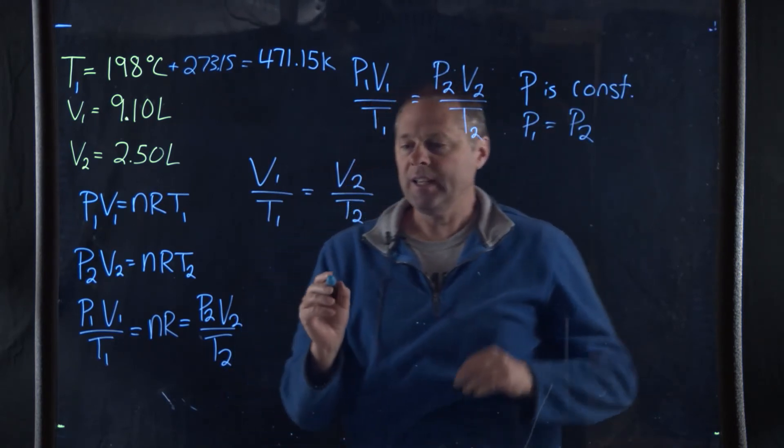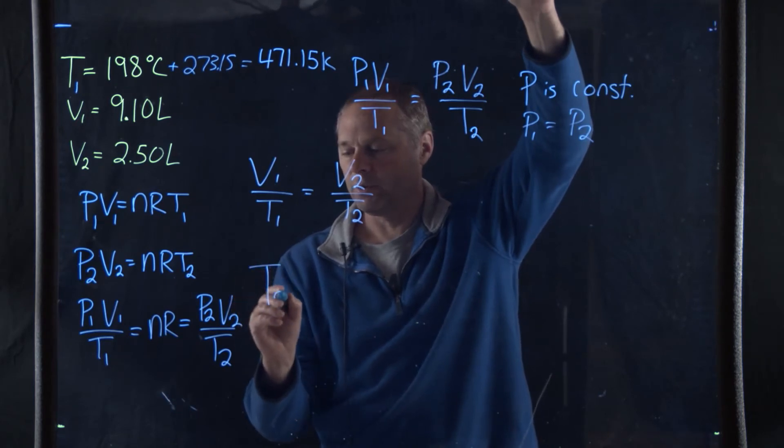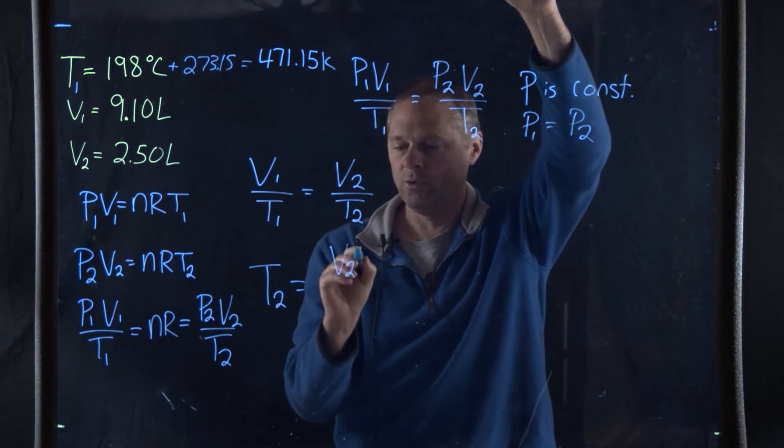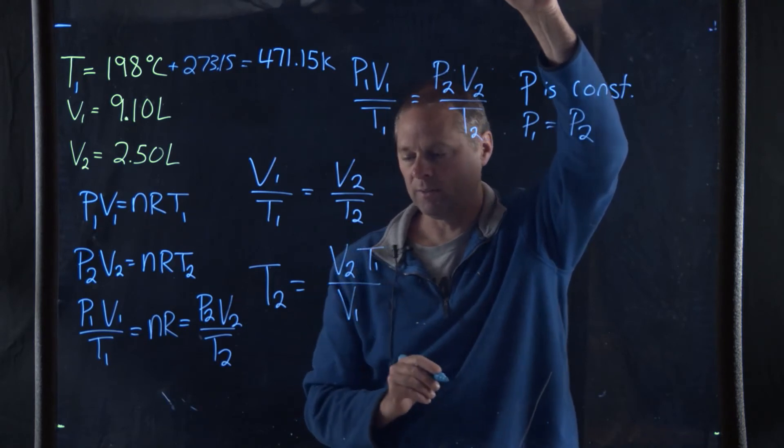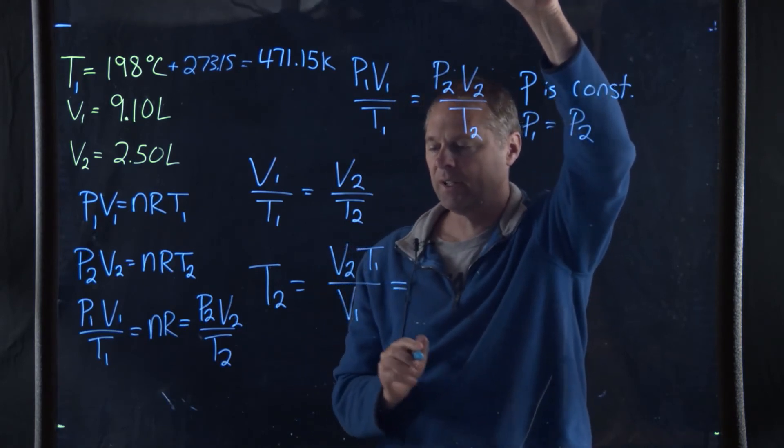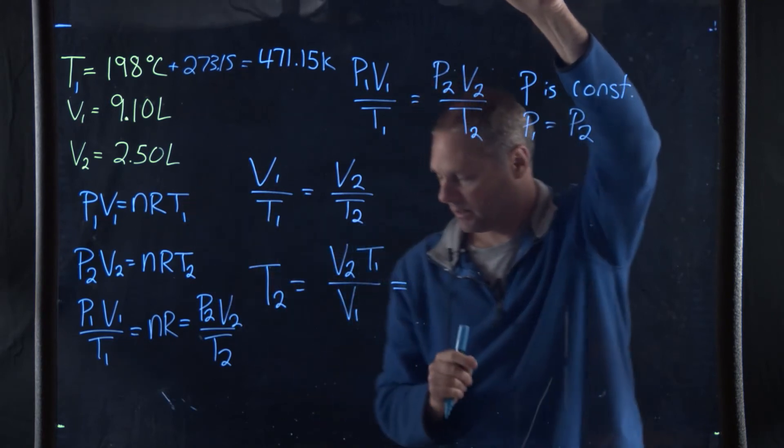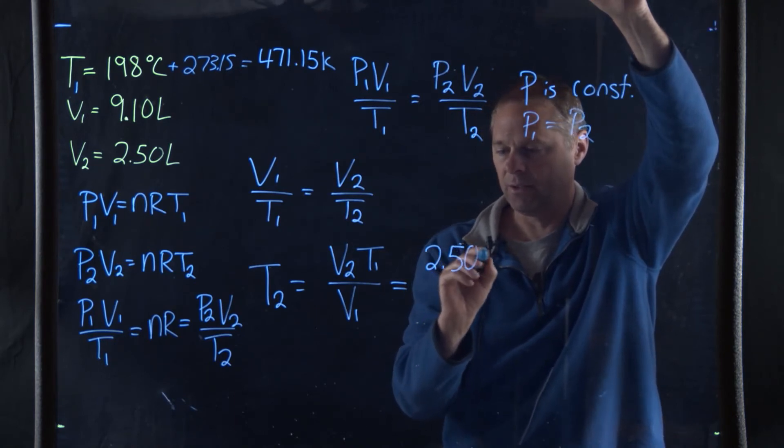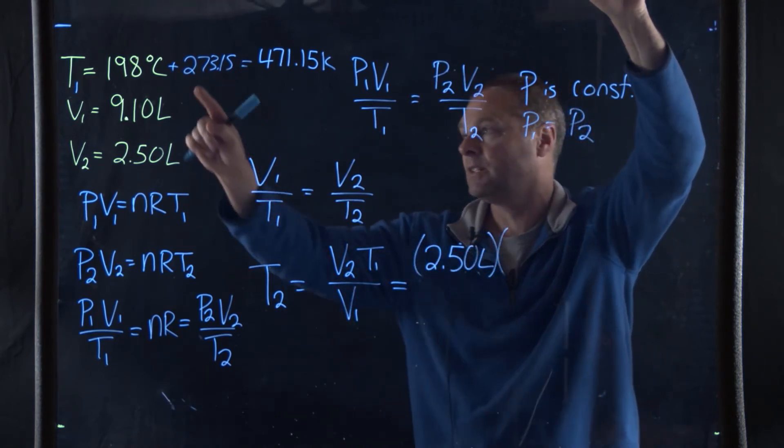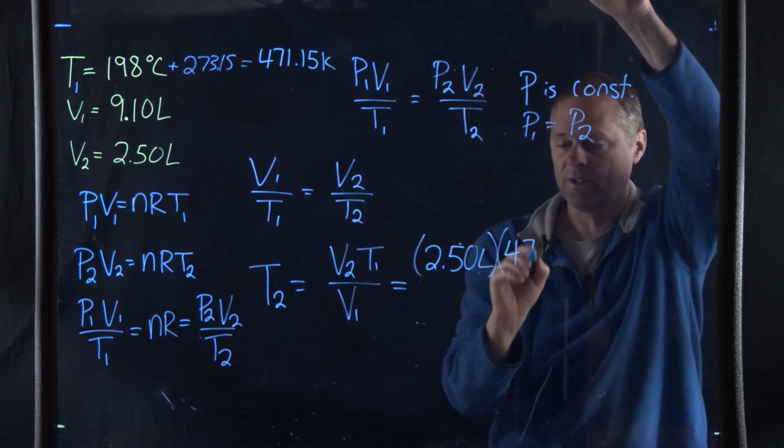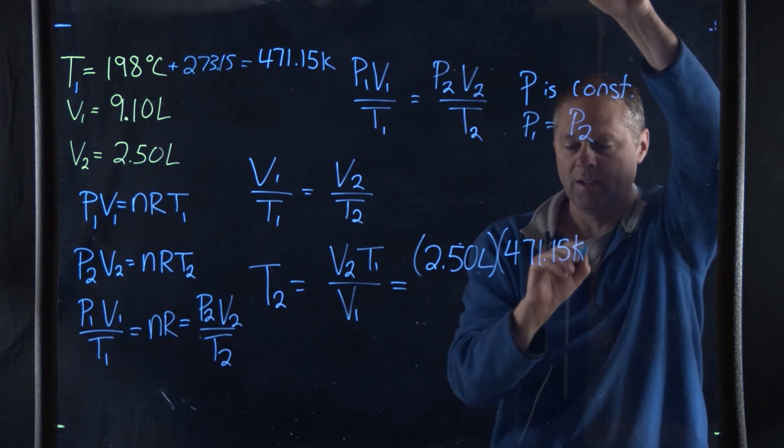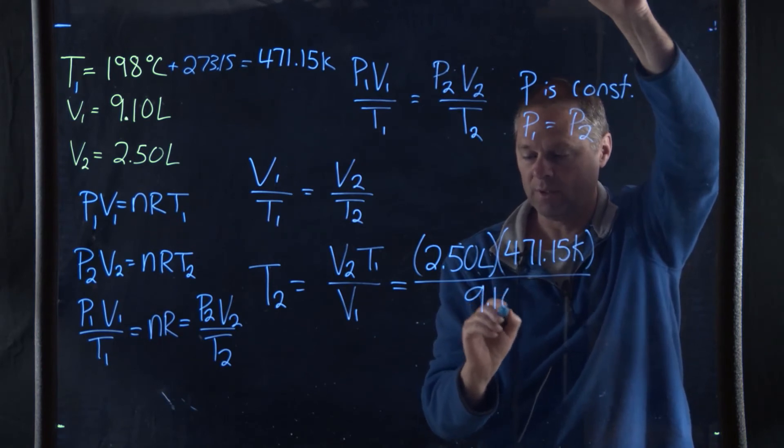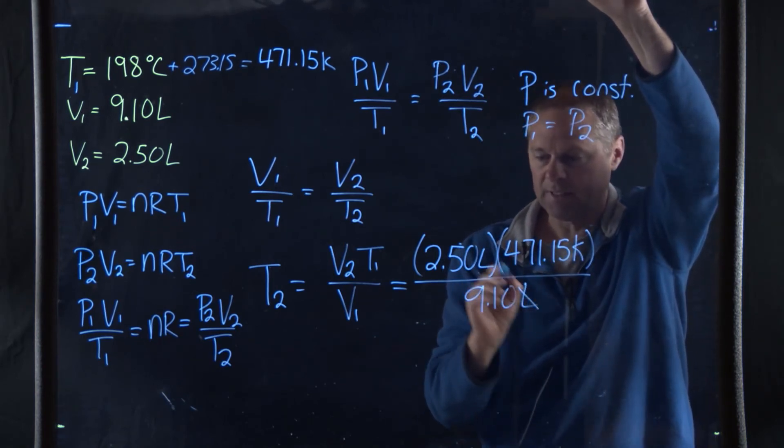Since we're solving for T2, we can write the equation in terms of T2. So T2 is going to be equal to V2 T1 all over V1. And now we can simply plug in our data. This is going to be 2.50 liters times T1, which is 471.15 Kelvin, divided by the initial volume, which is 9.10 liters. And you can see what happens is that the liters cancel.